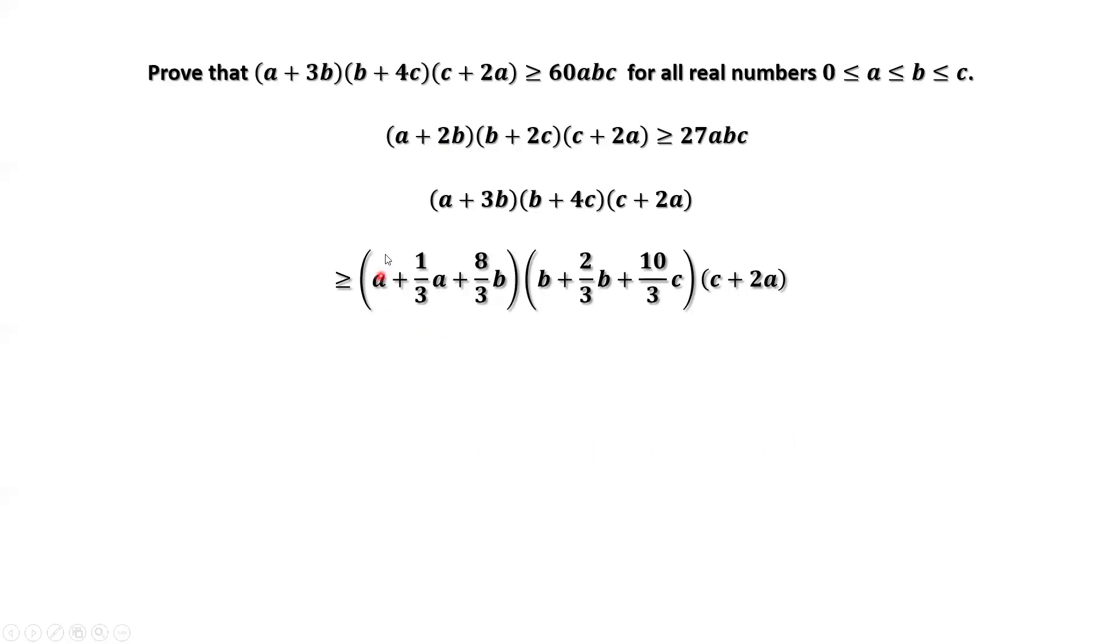We can simplify the sum of the first two terms, which gives (4/3)a + (5/3)b. In this first part, the common factors (4/3) and (5/3) can be factored out. After simplifying, we have (20/9)(a + 2b)(b + 2c)(c + 2a). This part we can use this result now.